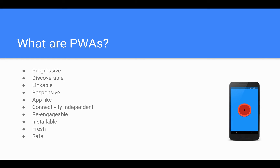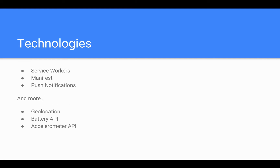HTTPS is very important because service workers give a lot of control, and if there is a man-in-the-middle attack, incorrect assets such as JavaScript could be served and the user might not be aware they are being snooped on, or could even have their content manipulated.